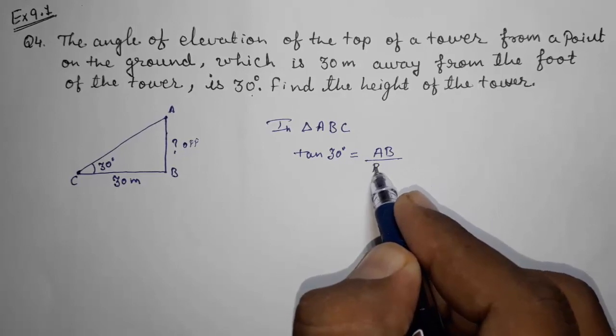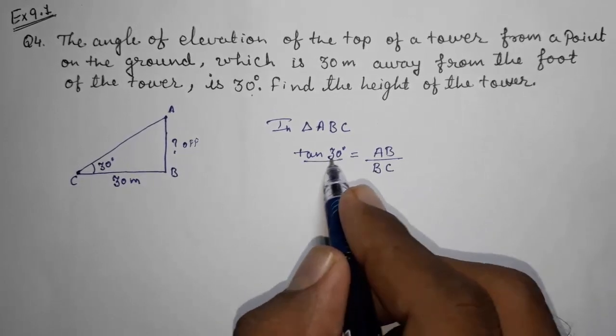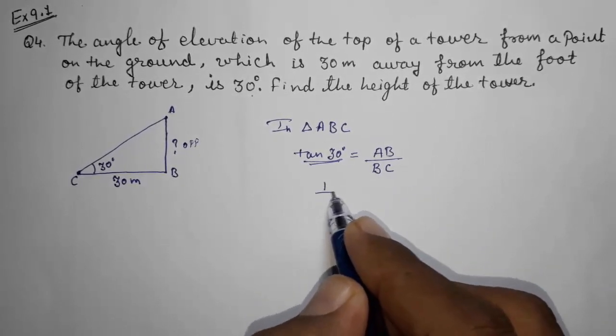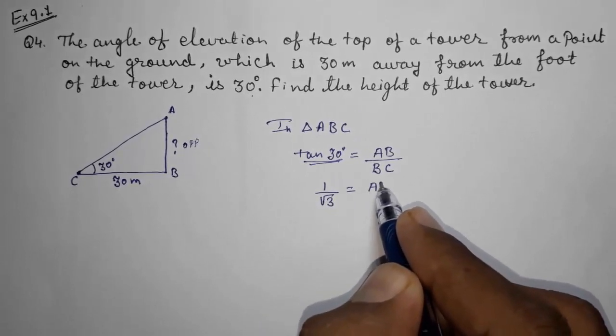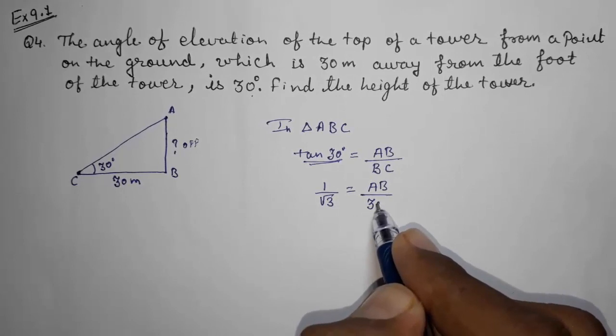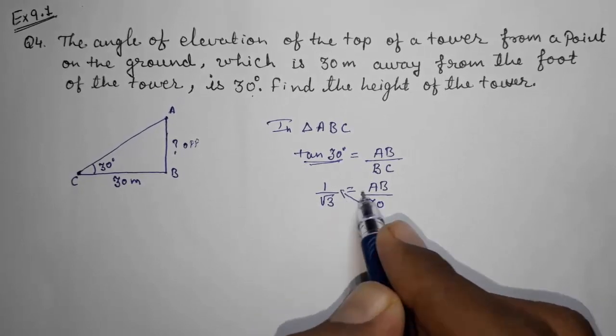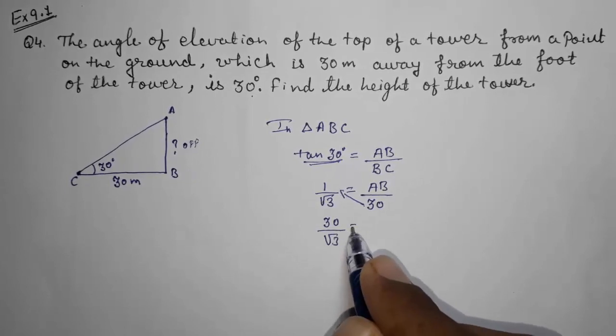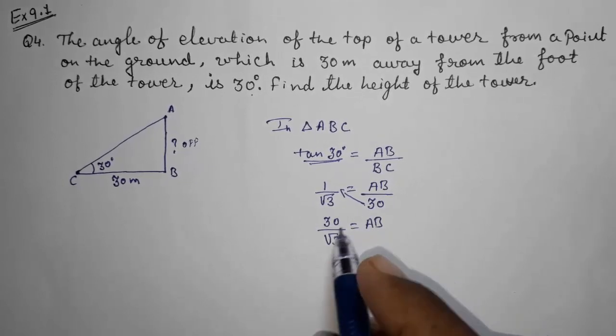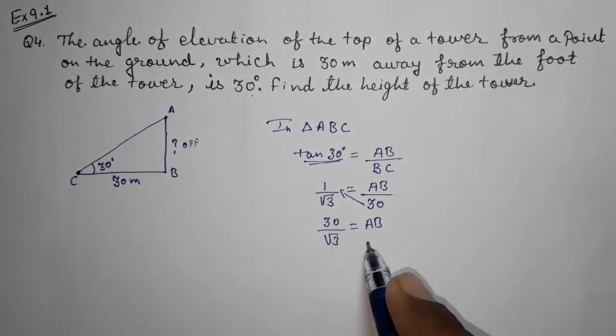That is AB upon BC. Now the value of tan 30 is 1 by root 3. AB we want to find out, BC is 30, so take this 30 here. So this will become 30 by root 3 is equal to AB. So the height is 30 by root 3.